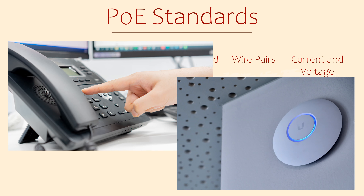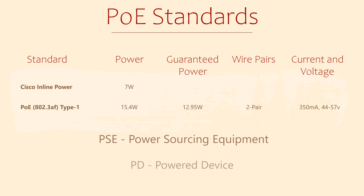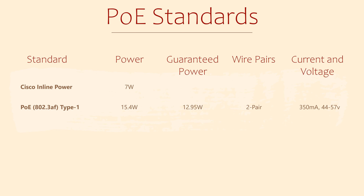You probably know that we measure power in watts. Like any power solution, there is a little power loss as power runs over the cable, and it's no different with network cables. So Type 1 PoE supplies 15.4 watts at the port but only guarantees 12.95 watts at the powered device. Any device that supplies power is called a PSE, or power sourcing equipment. Any device that consumes the power is called a PD, or powered device.